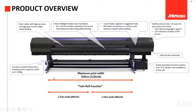Beberapa fitur yang paling menonjol dari produk SWJ 320EA ini adalah dia bisa twin roll function. Twin roll function ini bisa langsung melakukan printing secara bersamaan untuk media yang ukurannya 1,5 meter ke bawah, tapi langsung dua bahan. Misalkan kita punya dua bahan ukuran 1,5 meter, kita bisa langsung naik kedua-duanya dan di-print secara bersamaan meskipun desainnya berbeda ataupun sama.